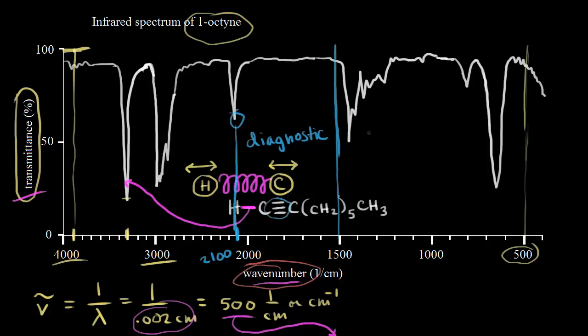The right side of this line is called the fingerprint region. It's harder to interpret — much more complicated, and not as easy to identify individual signals. However, it is unique to each molecule, like a fingerprint. You can match up IR spectra: if you have an unknown compound, you can look at the fingerprint region because all those different lines are unique to that molecule. We have the diagnostic region and the fingerprint region, but we're going to focus mainly on the diagnostic region.